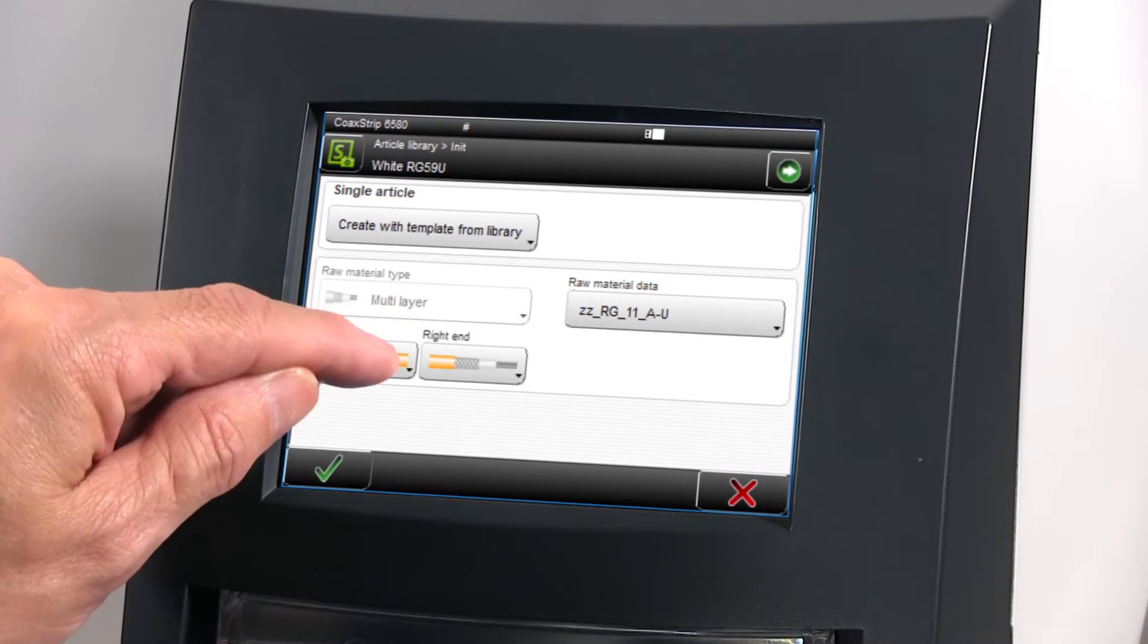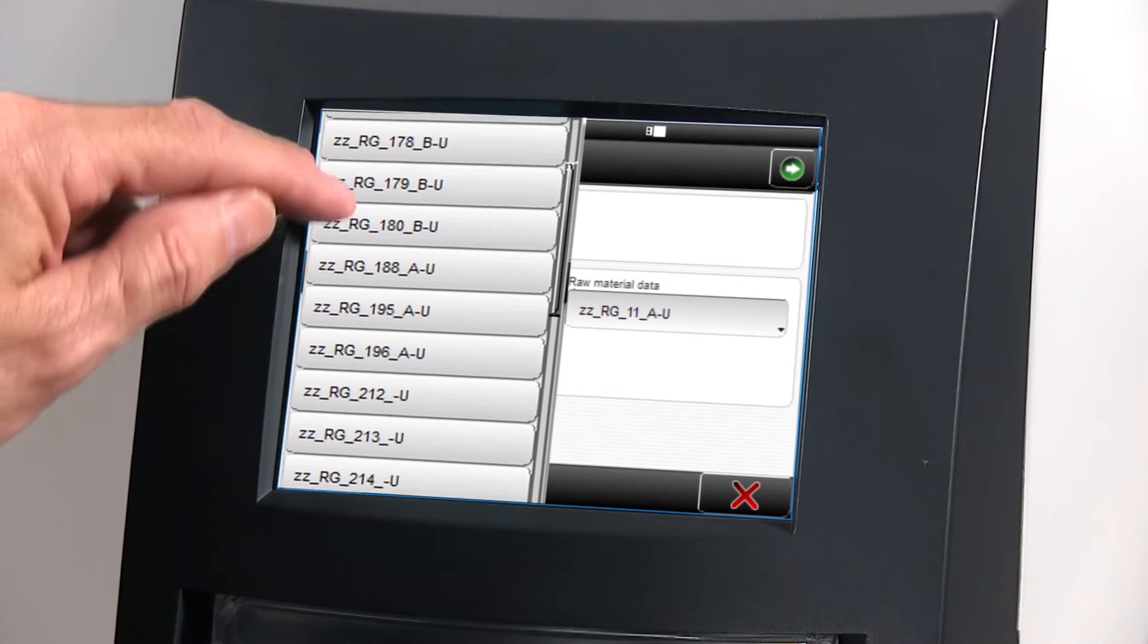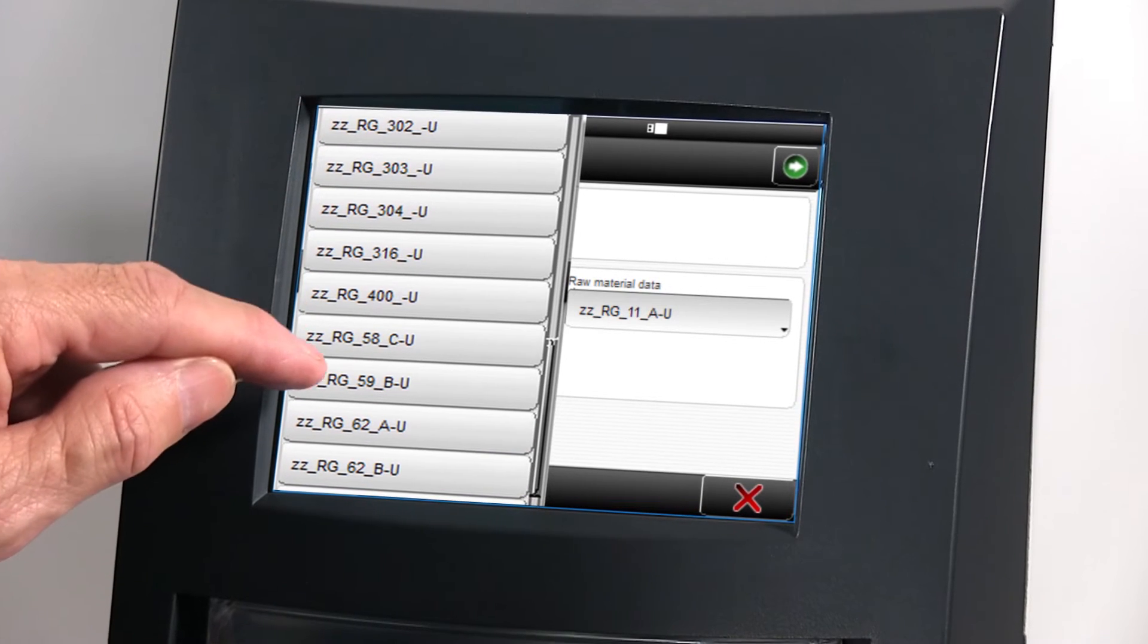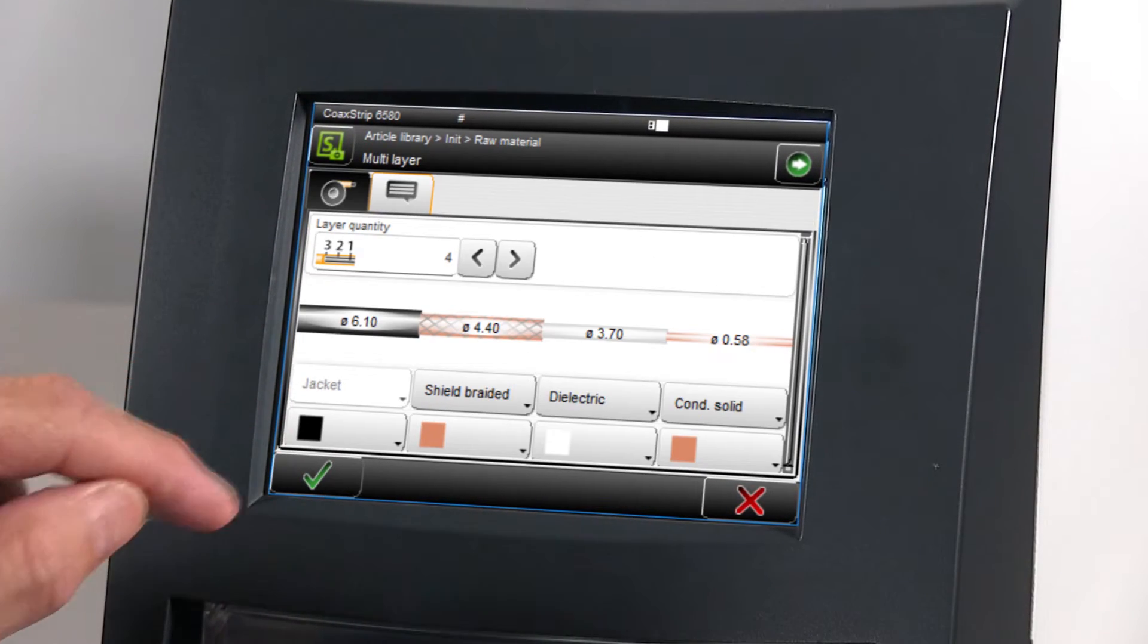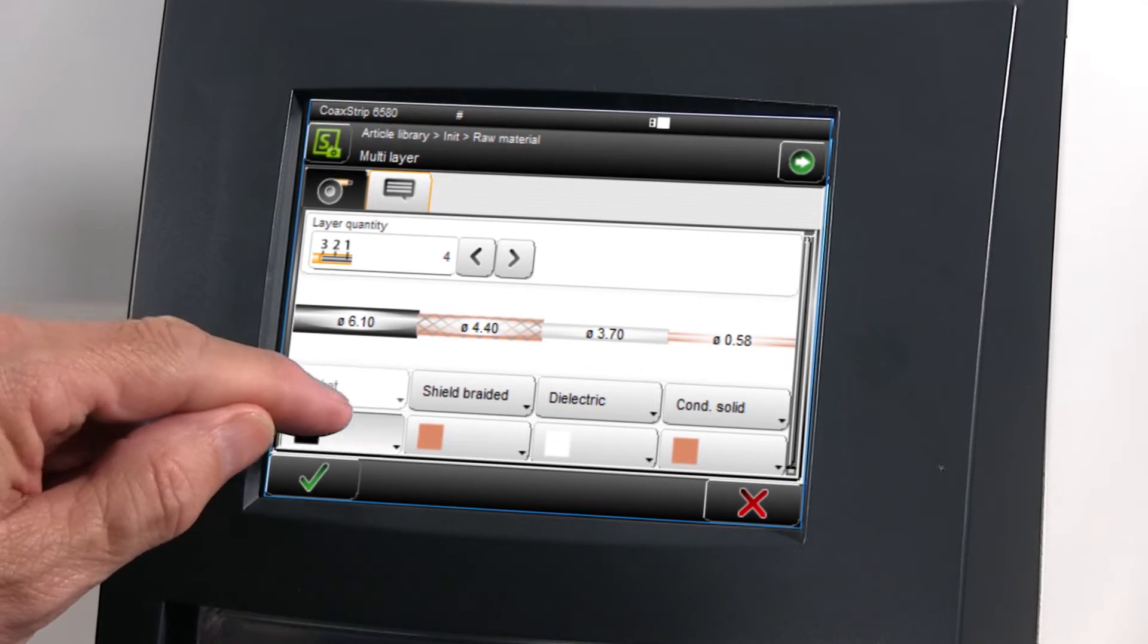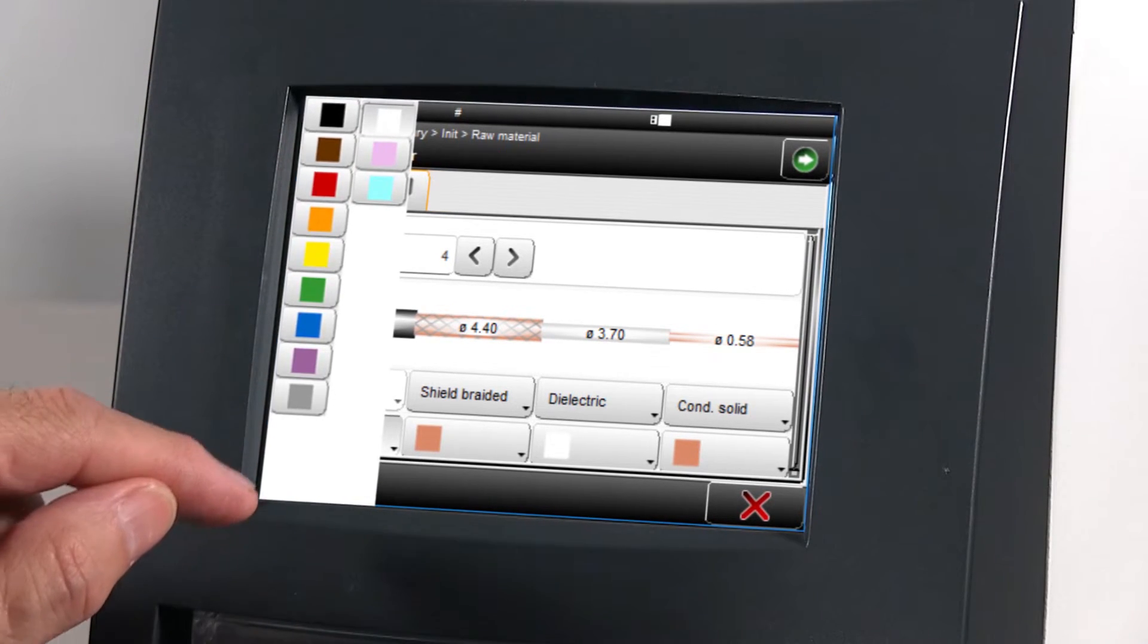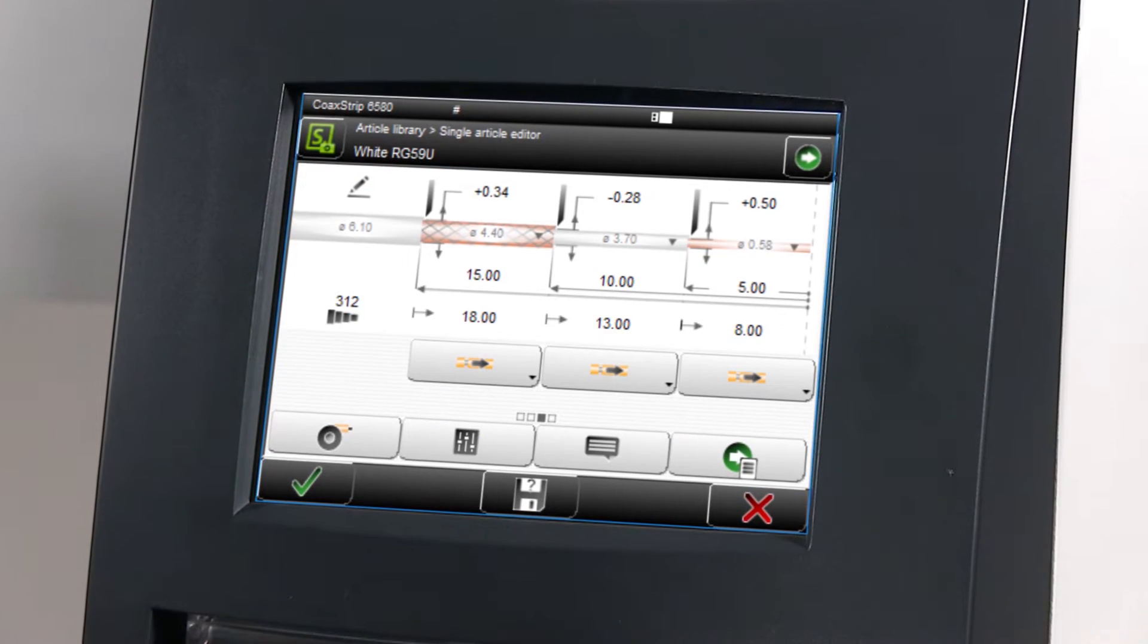Utilizing Schleuniger's highly successful programming platform, S-On, newly implemented functionality enables optimum processing on a diversity of wires and cables covering a wide range of applications.